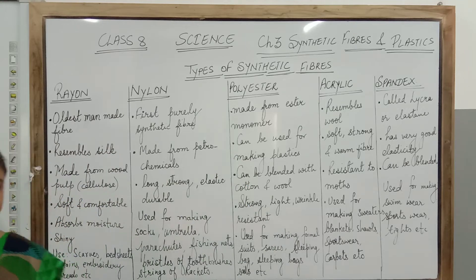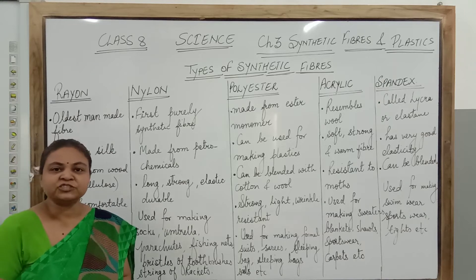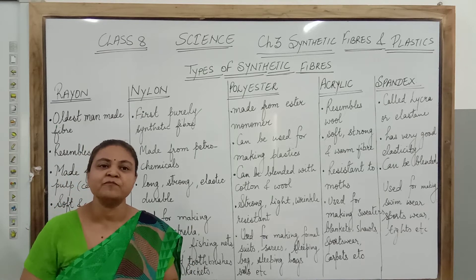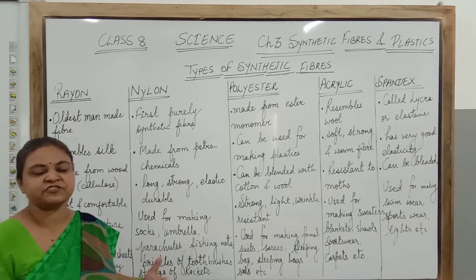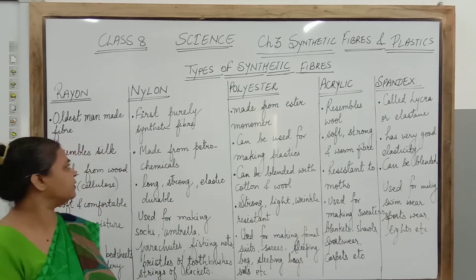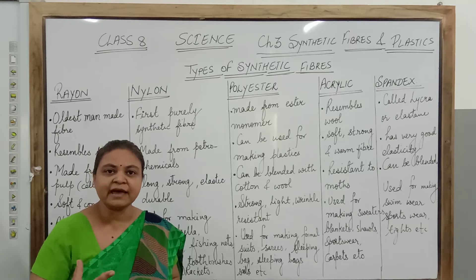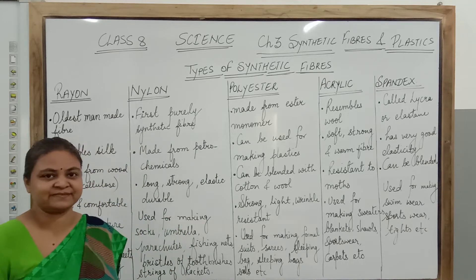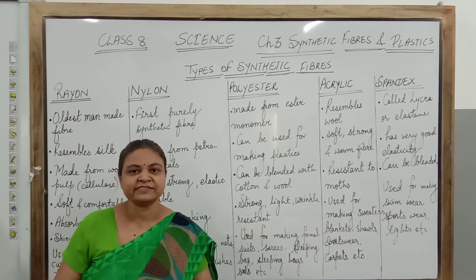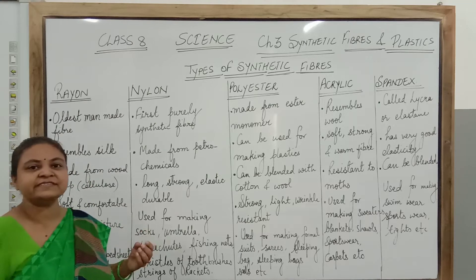Let us begin first with rayon. Rayon is the oldest man-made fiber, but actually it is made from natural materials. Although it is a man-made fiber, it is made from wood pulp. Cellulose is the polymer which is extracted from the wood pulp and rayon is made from this cellulose polymer. The property of rayon is that it is very shiny and lustrous, and that is why it is also called artificial silk — not natural silk, artificial silk.